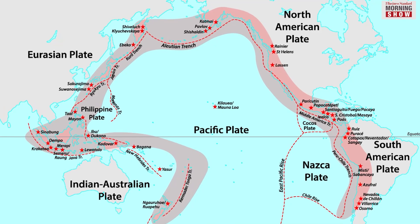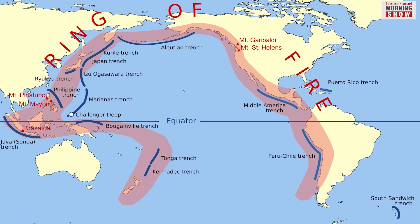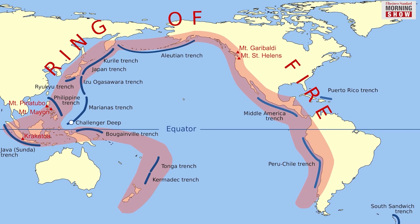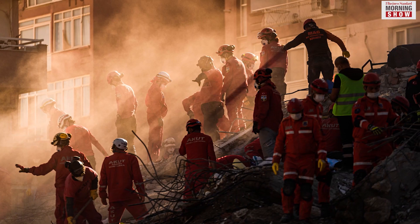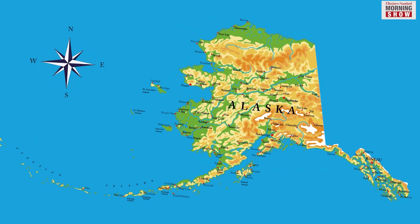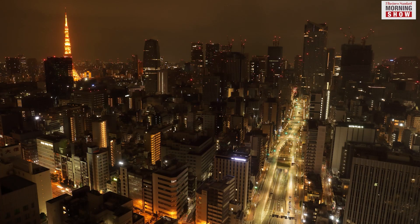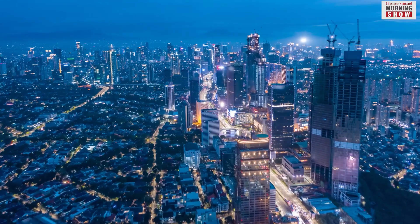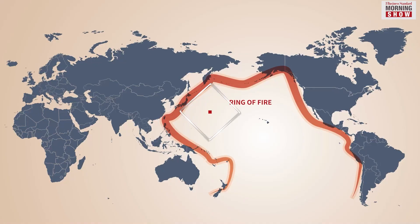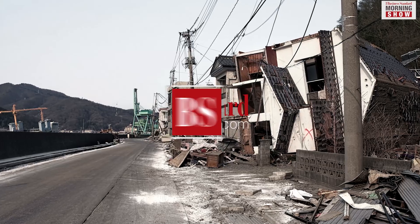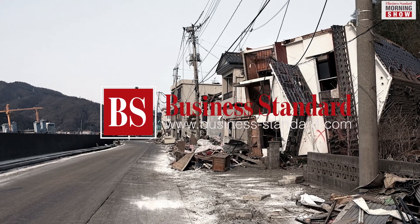The circum-Pacific belt, found along the Pacific Ocean's rim, is the world's most earthquake-prone belt — 81% of all earthquakes occur there, earning it the nickname 'Ring of Fire.' The two most intense earthquakes occurred along this fault line: a 9.5 magnitude quake in Chile in 1960 and a 9.2 magnitude quake in Alaska in 1964. The capitals Tokyo, Jakarta, and Manila all sit atop the Pacific Ring of Fire, making them the most earthquake-prone cities in the world.